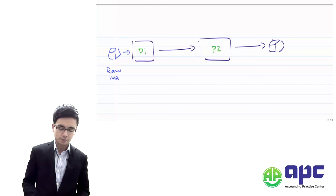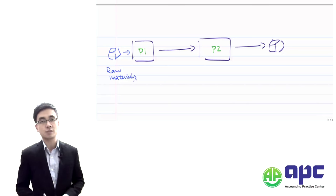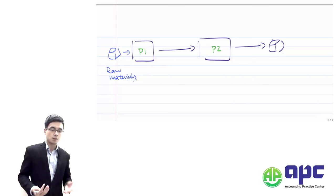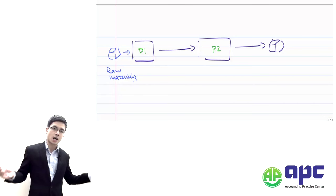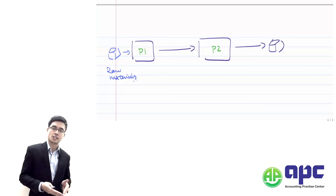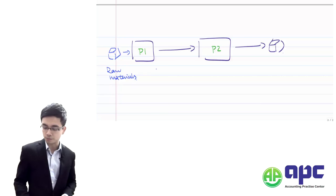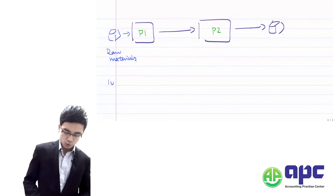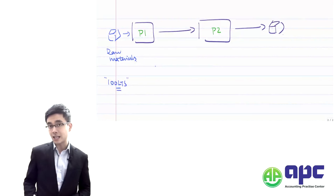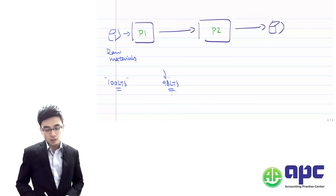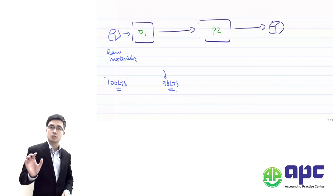Think about the oil refining industry: you've got the crude oil, and you're going to add labour, additional material, and overhead expenses, going through process one. For example, you input 100 litres of pure oil and at the end of process one, you can only get 98 litres out. So there will be 2 litres of loss.